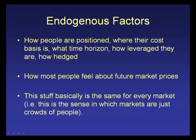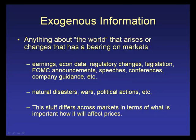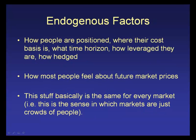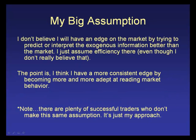What I'm trying to figure out is where the weak hands are and where the strong hands are. The big point is: the endogenous stuff is the same for every market. The exogenous stuff differs — individual markets have very specific things that move them, like crude oil inventory data or ECB statements for the Euro. But the endogenous characteristics are universal across all markets.